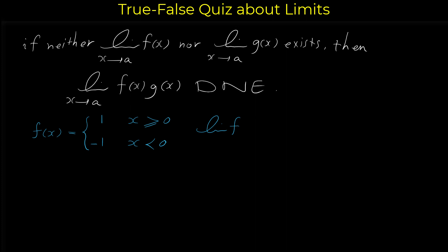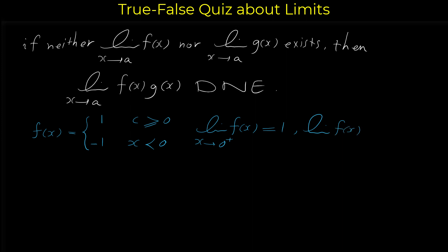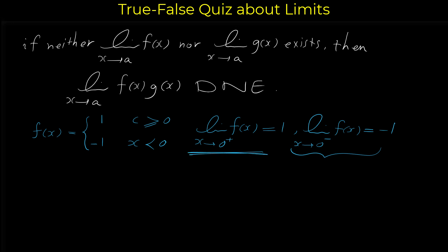The limit of f(x) as x approaches 0 does not exist, because as x approaches 0 from the right we use the equation for x > 0, giving a limit of 1. But the limit as x approaches 0 from the left is -1, because the function is always -1 for x < 0. Since the left-hand limit (-1) and the right-hand limit (1) are not equal, the limit of f(x) as x approaches 0 does not exist.